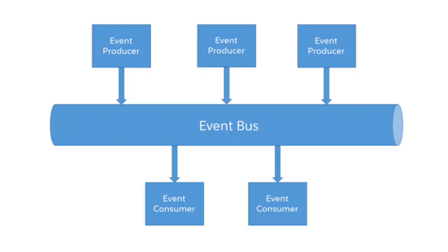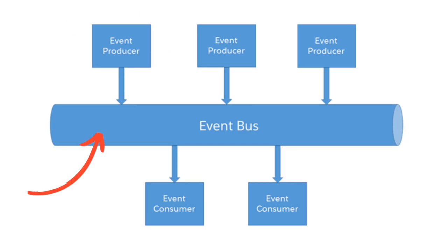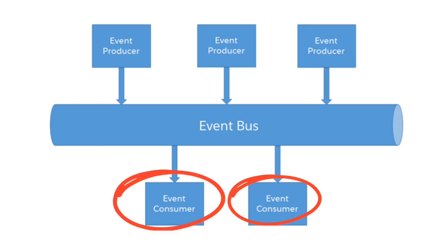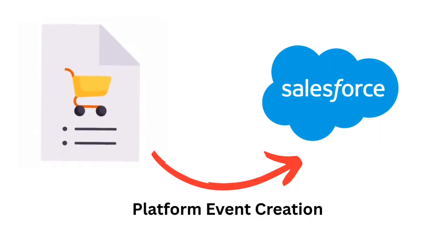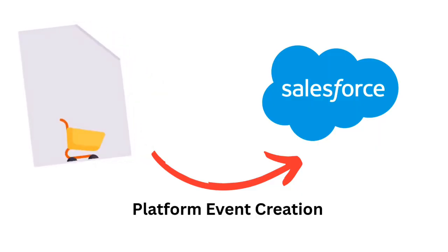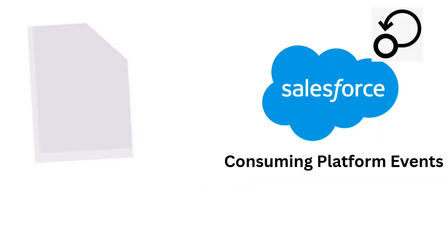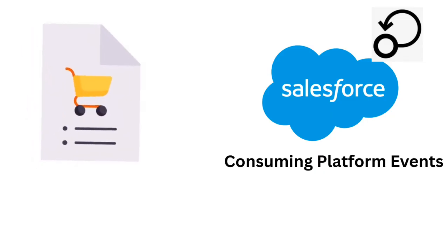And this is where platform events come into the picture. A platform event has a producer which produces the event, and the event bus can be considered as a path which takes your data. There can be multiple consumers consuming the data from the same event. In our case, when the product is shipped, the system will publish a platform event, and we can consume the same platform event to do a variety of tasks inside our Salesforce app.